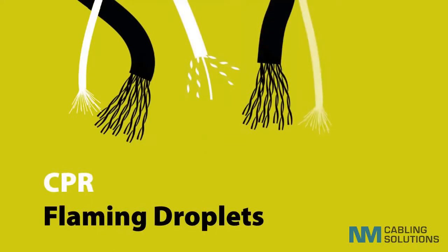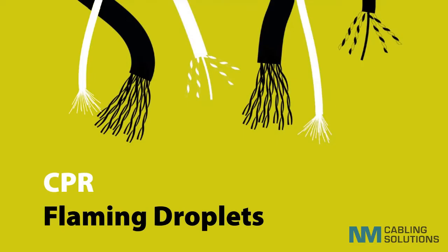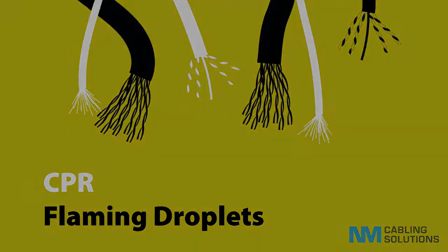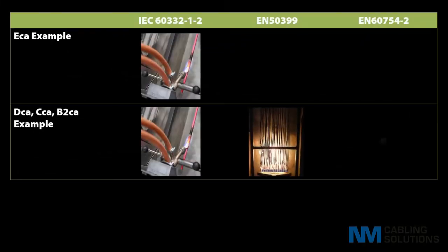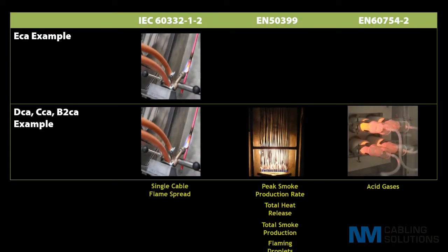This particular presentation relates to the Construction Products Regulation and the general level of misunderstanding and confusion surrounding the testing methods employed to classify cables. We will endeavor to explain the important topic of flaming droplets testing and the methods used.